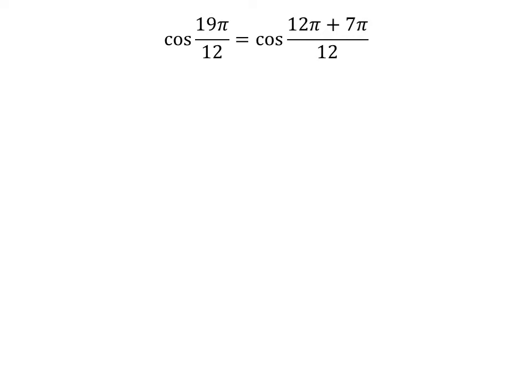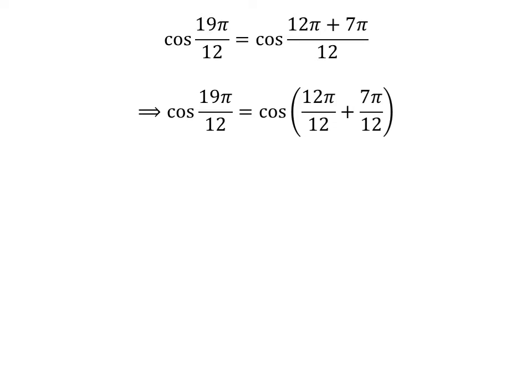19 times pi is equal to 12 times pi plus 7 times pi, so cosine of 19 times pi upon 12 is equal to cosine of 12 times pi plus 7 times pi upon 12. The fraction can be expressed as a sum of two fractions, so cosine of 19π/12 equals cosine of 12π/12 plus 7π/12. Cancelling out the common factor in the numerator and denominator gives us cosine of 19π/12 is equal to cosine of pi plus 7π/12.